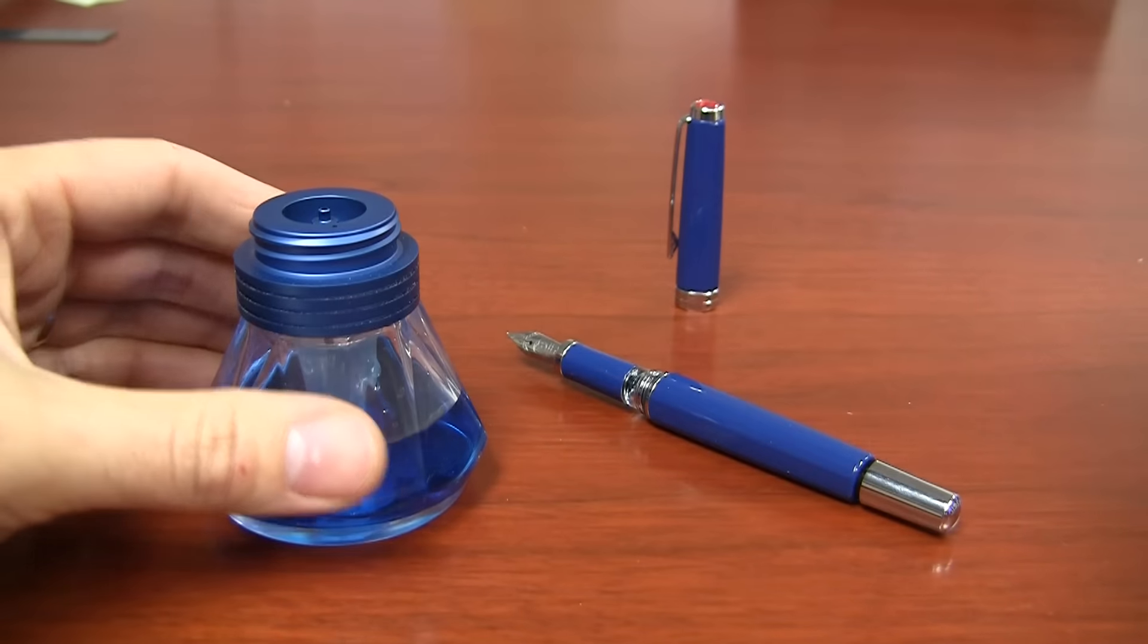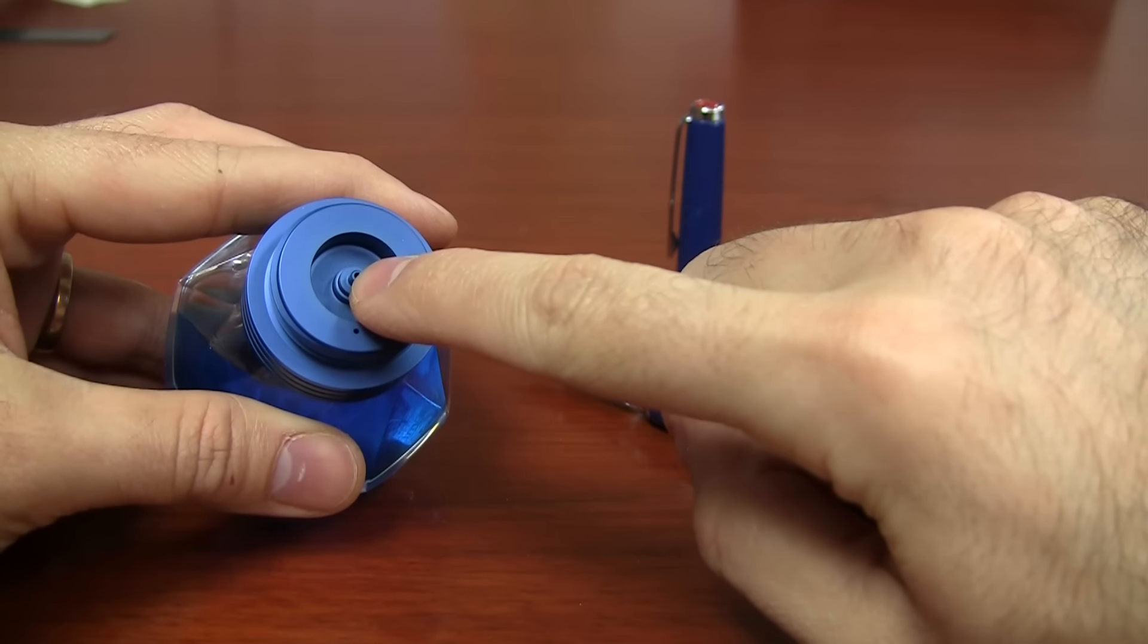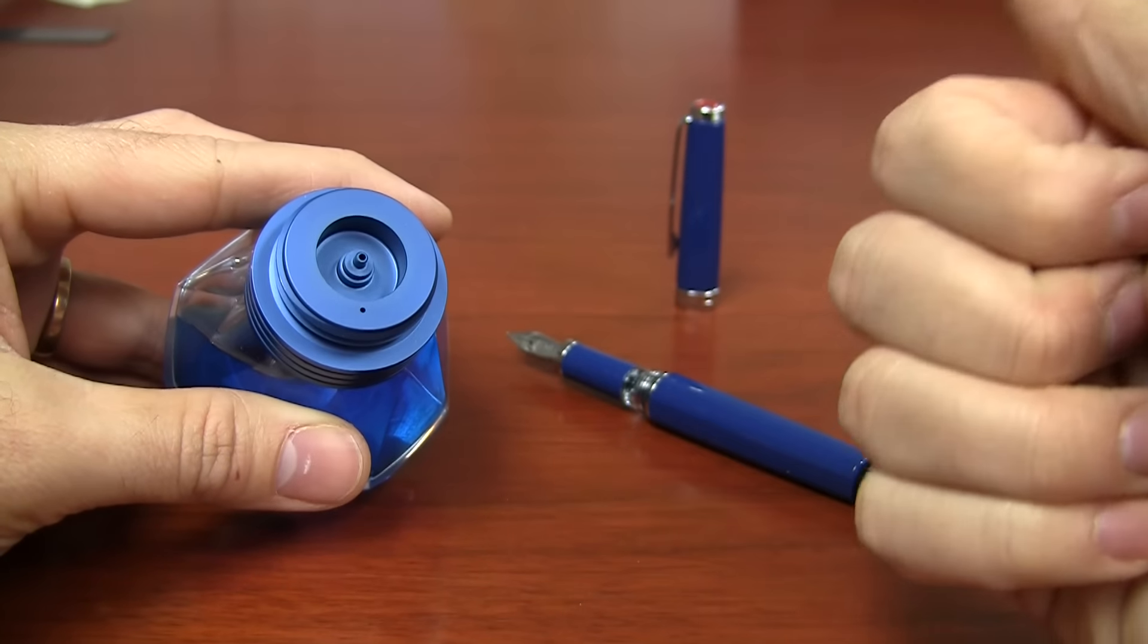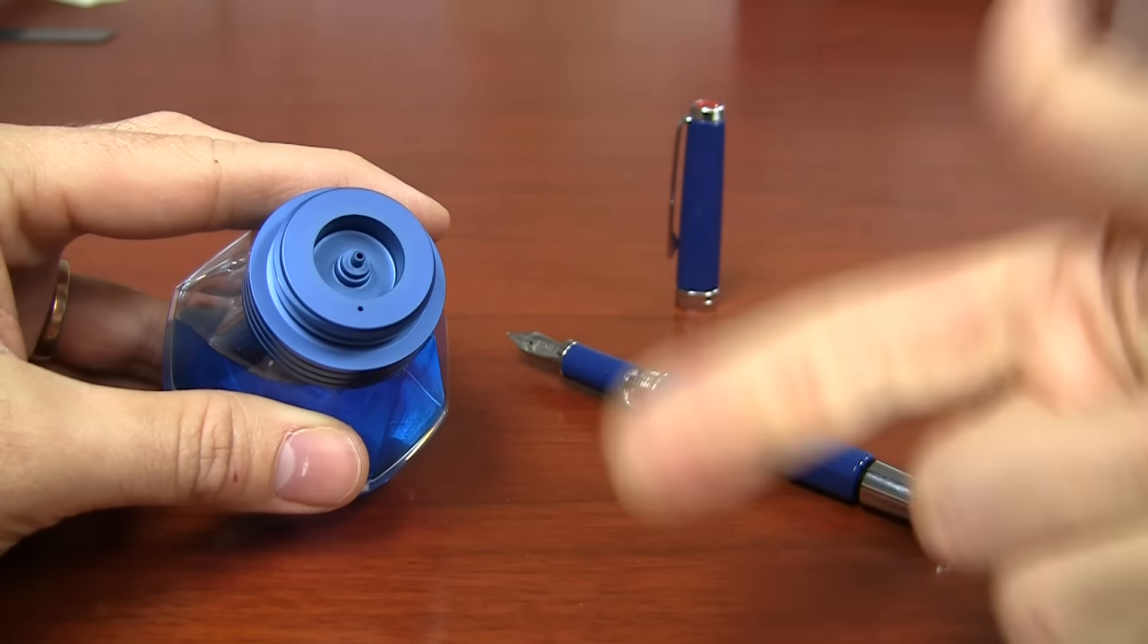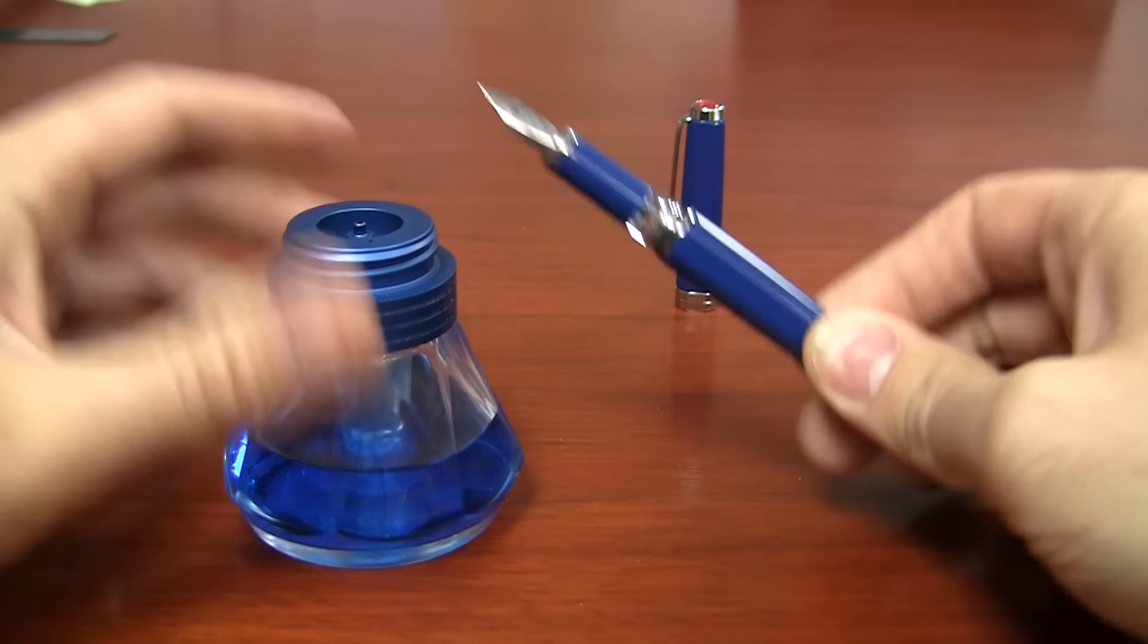You can actually unscrew just this black part here and it's got several different steps. Now you can fit a standard international converter on here. You can fit the 530, 540, 580, TWSBI Mini, and now the TWSBI Classic on here.